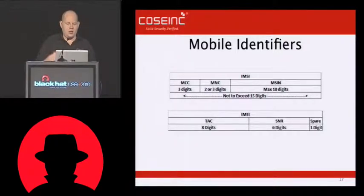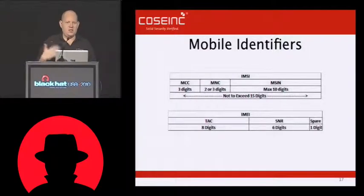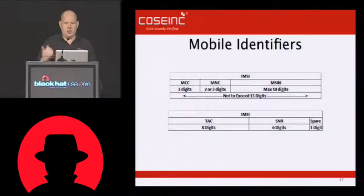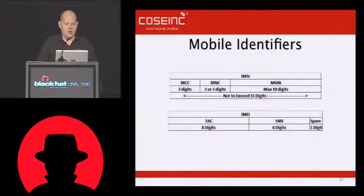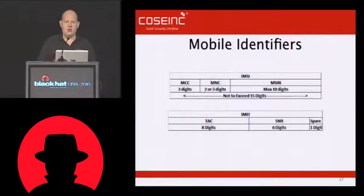Or if I'm setting up a spoofing base station — the base station broadcasts on the BCCH the MCC and the MNC. So mobile phones can figure out whether they're supposed to associate with that particular tower or not. So the MCC and the MNC are very important — they're the key identifiers used for networks within the GSM environment.